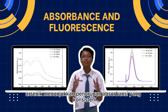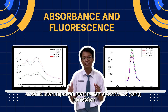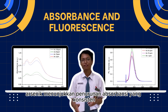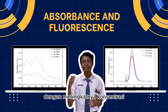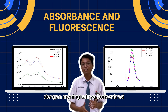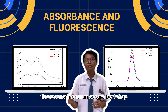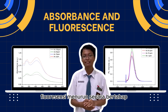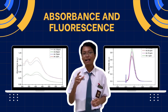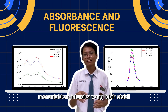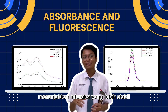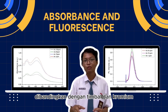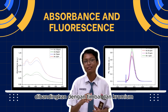Arsenic shows a consistent decline in absorbance with increasing concentration, and fluorescence decreases gradually. This suggests a more stable interaction compared to lead and chromium.